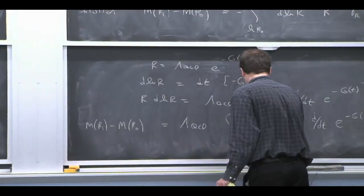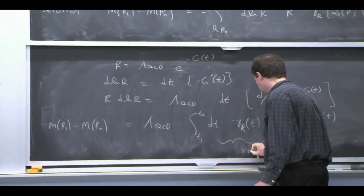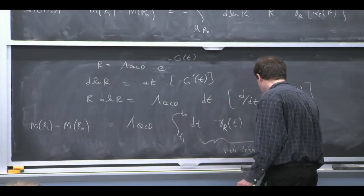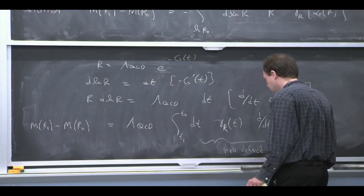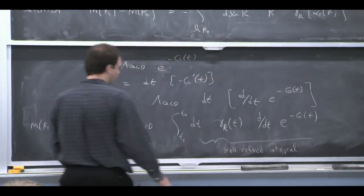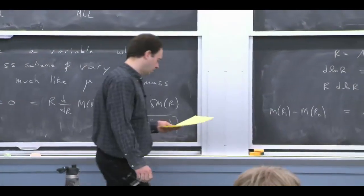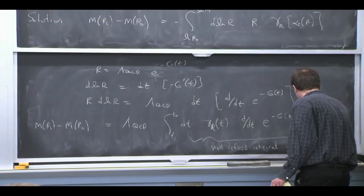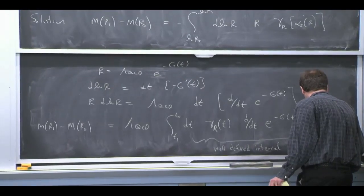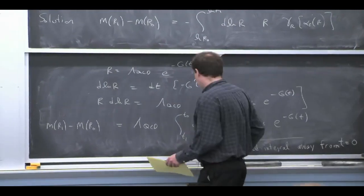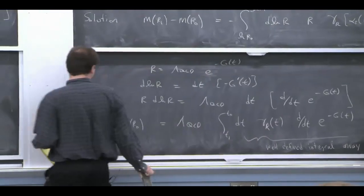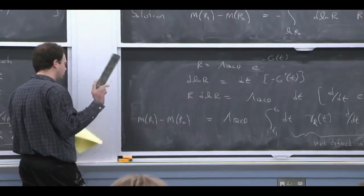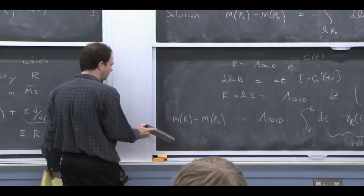And this is a well-defined interval. There's no problems with doing it. The place where the integral could start causing problems is T equals 0, but we're never getting to T equals 0. We have cutoffs that are keeping us away from T equals 0. So it shouldn't surprise you that it's a well-defined integral, because we said that these things are supposed to be well-defined masses that are not sensitive to these renormalon problems.